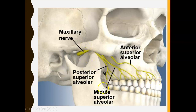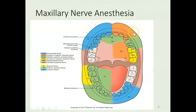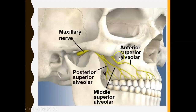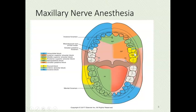There's also the middle superior alveolar artery, which supplies the middle teeth in the maxillary arch. A middle superior alveolar block would numb that middle region. Similarly, the posterior superior alveolar artery supplies the back upper teeth, and a block in that area numbs the posterior maxillary teeth. These are different injections dentists use to produce numbness in specific areas.